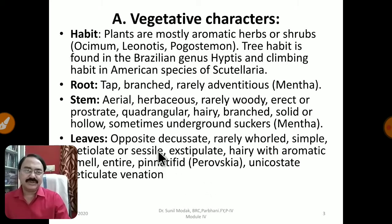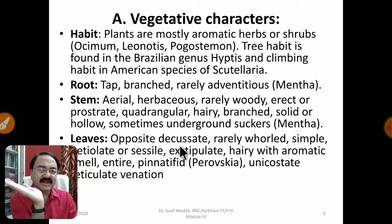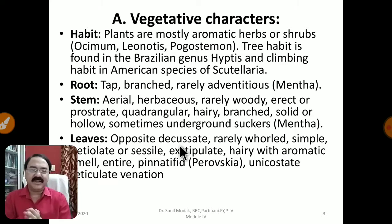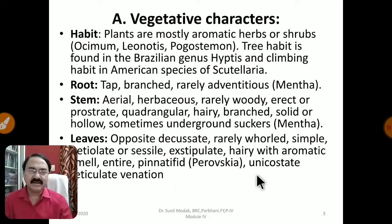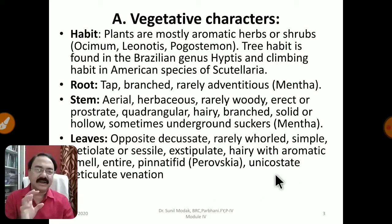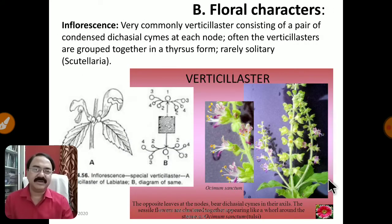Leaves are also very typical — opposite and decussate. Opposite and decussate means one pair of leaves is present at one node, and the second pair is at the second node, but the orientation is at right angles to each other — that is called decussate. Rarely whorled in some members. They are simple, petiolate, sometimes sessile, exstipulate — they don't have any stipule. Leaves are hairy with aromatic smell; they are entire, sometimes pinnatifid as in Perovskia. Venation is reticulate.